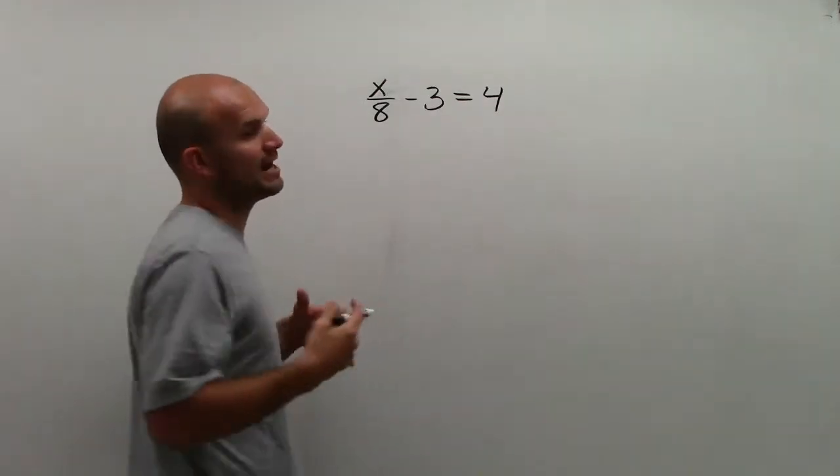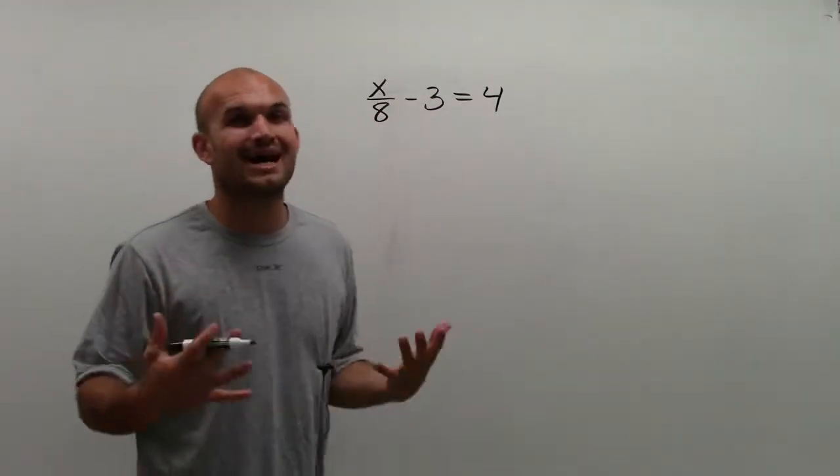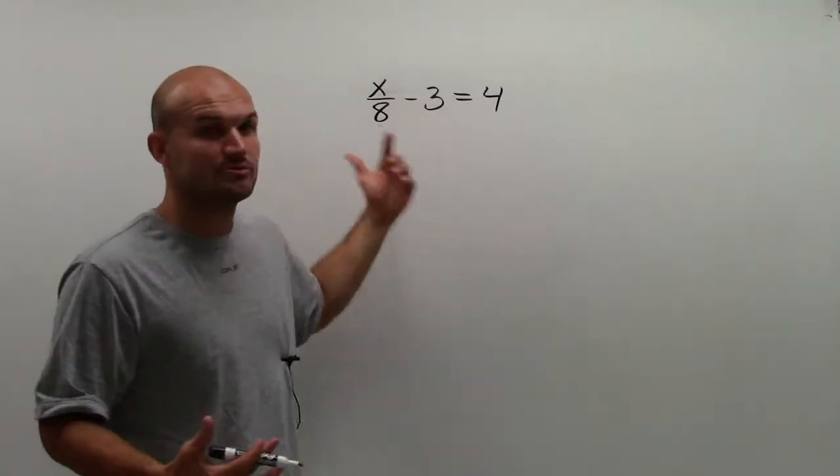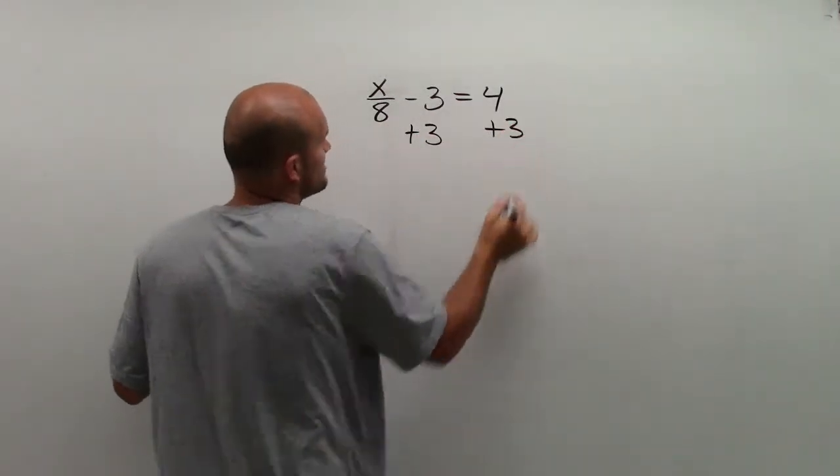So here I have my variable x is being subtracted by 3. And remember, our point is we need to isolate that variable. So to undo subtracting my 3, I'm going to add 3 to both sides of my equal sign.